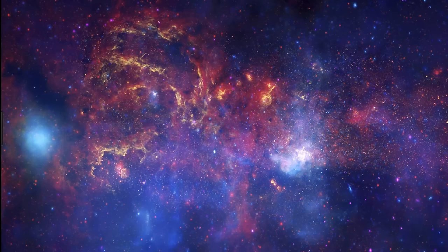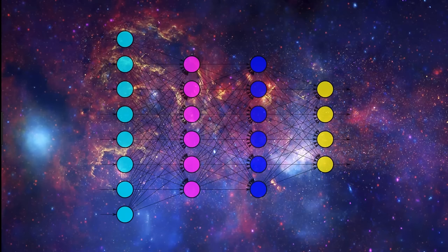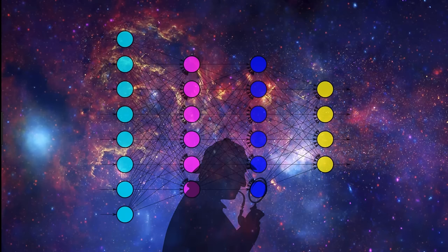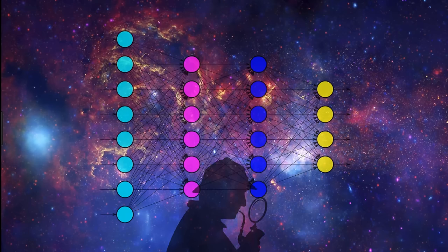Most generally, we can think of a CNN as an artificial neural network that has some type of specialization for being able to pick out or detect patterns and make sense of them. This pattern detection is what makes CNNs so useful for image analysis.